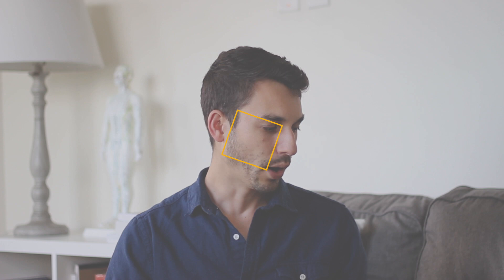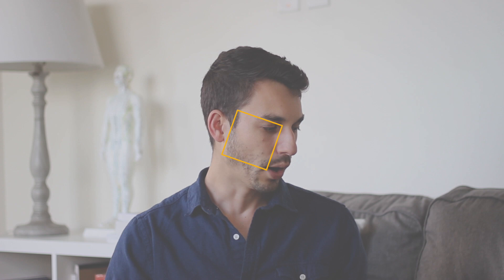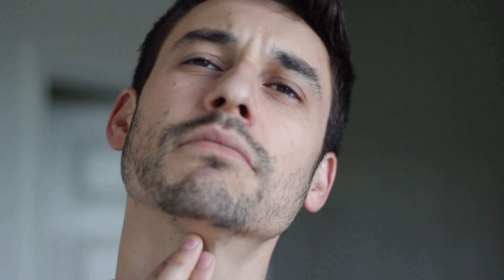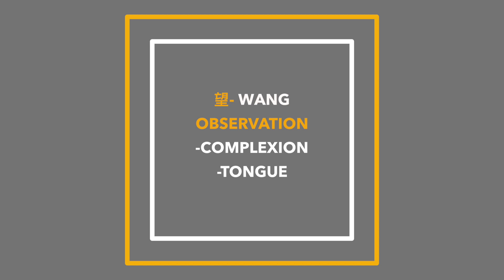Wang stands for observation, which means we observe the complexion of the patient's face. Is it more red — like a person who's very sweaty and easily gets hot — or is it very pale? Are there spots anywhere? Is there a certain color like green or yellow?